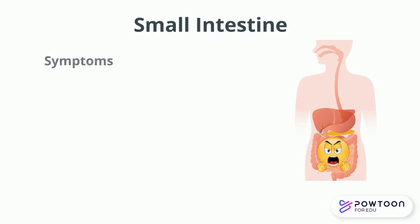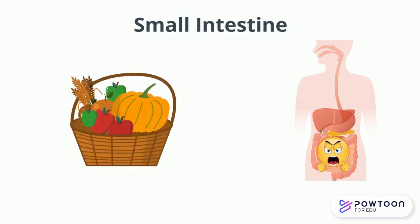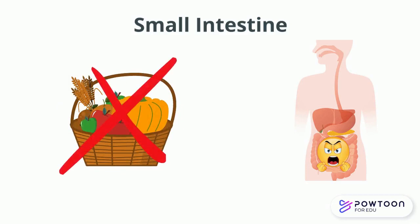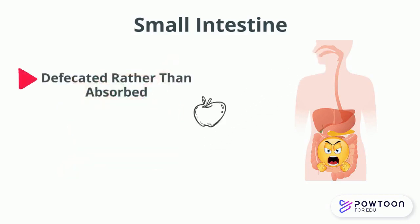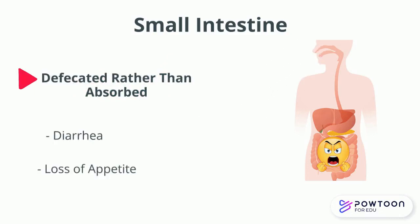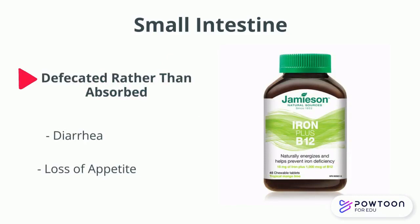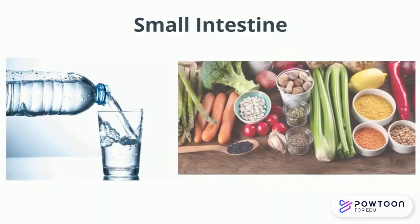Other symptoms such as pain, fatigue, and loss of appetite caused by Crohn's disease worsen these effects, as there is a more restricted diet and less food being ingested. This also means that many nutrients that pass through the GI tract will end up being defecated rather than absorbed. Diarrhea and loss of appetite can also lead to deficiencies in iron and vitamin B12 due to less time in the GI tract, reducing the water and nutrients absorbed.